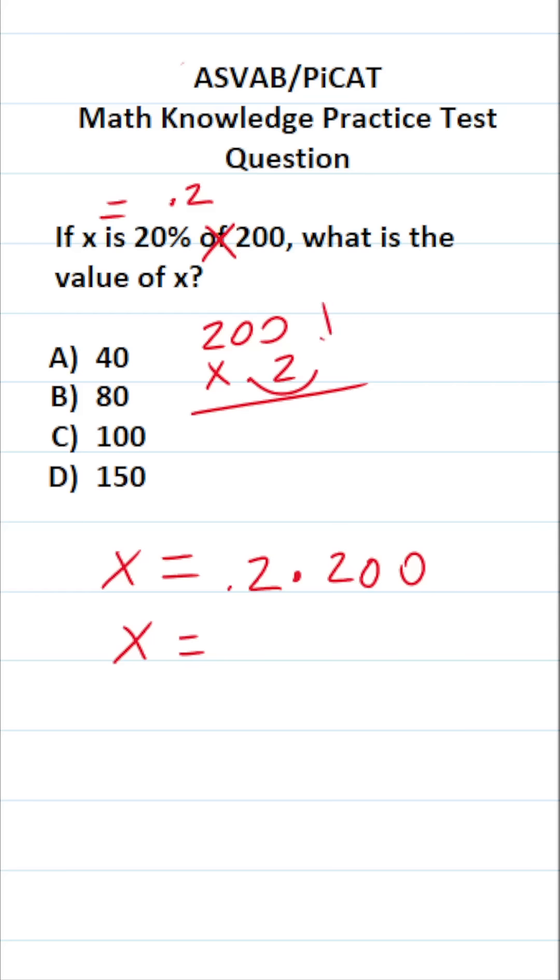Move your decimal one place to the right to make this 200 times 2, albeit with one decimal to move back into the left when you're done. 200 times 2 is 400. Move in our one decimal. You can see that x is simply going to be 40. So this one is A, of course.